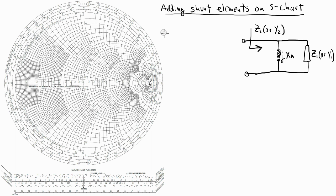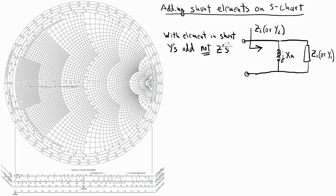From circuit theory, when you are adding circuit elements in shunt, you're adding the admittances — the Ys — and not the impedances — the Zs. I'm going to find my input impedance using the Smith chart through the use of the Y chart. So my first step is going to be to get Y1 from Z1, or the corresponding admittance.